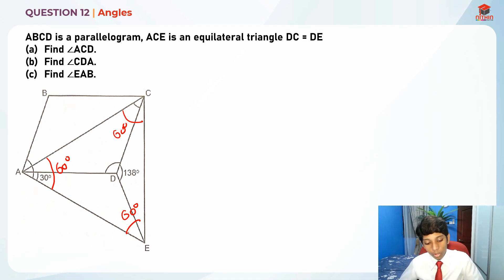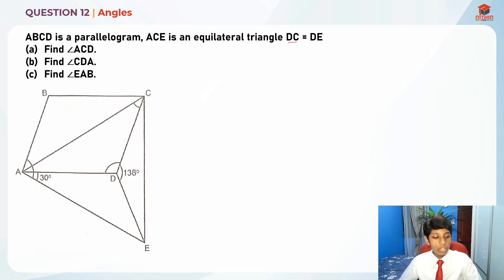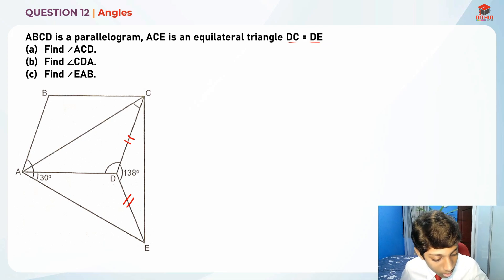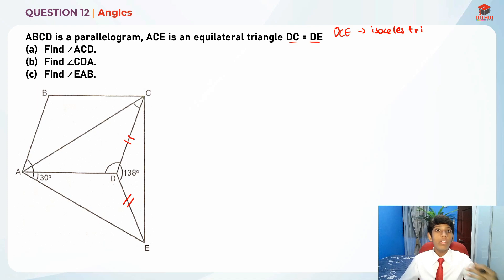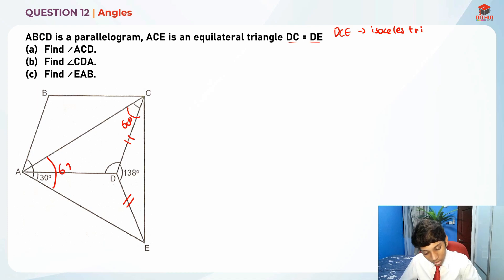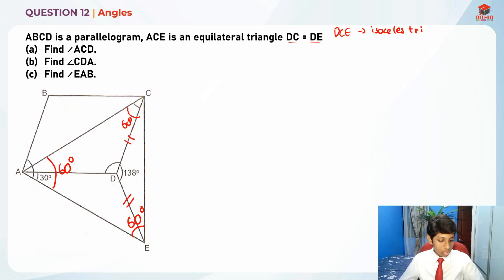All three of those angles are 60 degrees. Also, DC is equal to DE, which means that triangle DCE is actually an isosceles triangle. And we've noted that all three angles of the equilateral triangle are equal to 60 degrees.